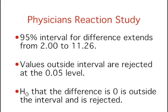Since 0 is lower than the lower limit of the interval, 2.00, it is rejected as a plausible value and the test of the null hypothesis that there is no difference between means is significant. It turns out that the p-value is 0.0057.